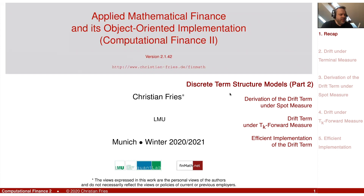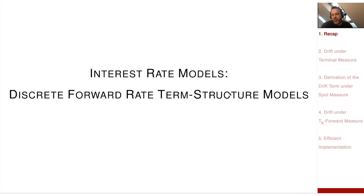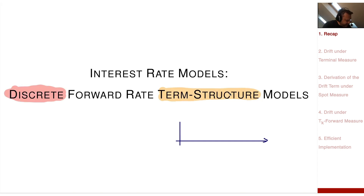Today on Applied Mathematical Finance, I continue the discussion of a more general interest rate model. The section we started was interest rate models — specifically, a model for the discrete forward term structure. The important part is 'term structure': we model the whole interest rate curve, specifically a discretized version, writing stochastic differential equations for a family of forward rates — perhaps 80 forward rates.